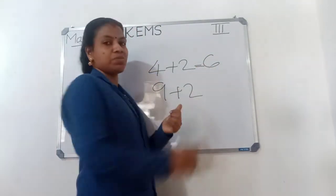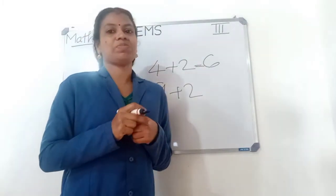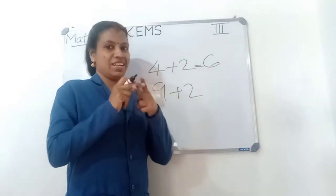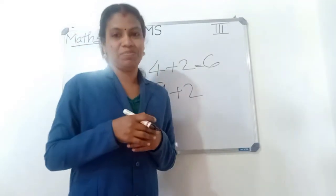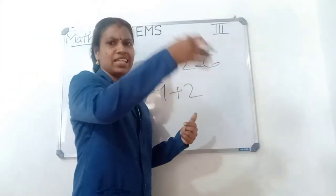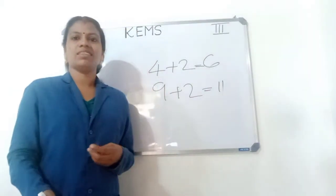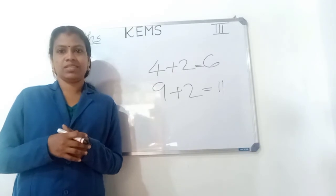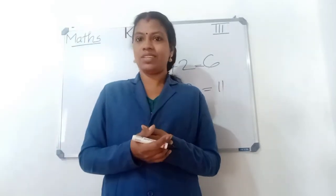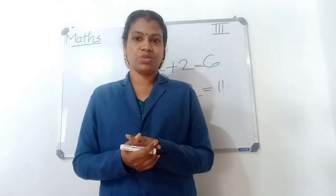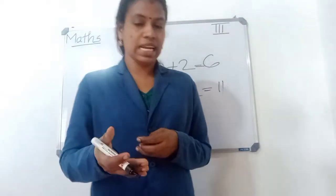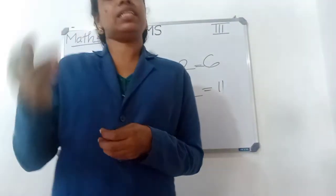9 plus 2: count two — 9, 10, 11 — so 11. Like that, we can add any number. 26 plus 2? Count: 27, 28. 99 plus 2? 101. One after the next number — that is 2's table. So the number is not the next number, but one after next.